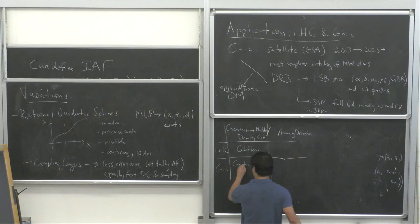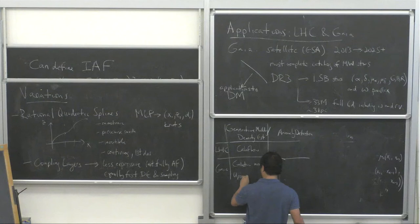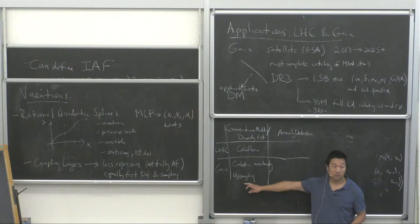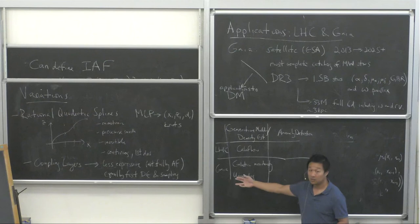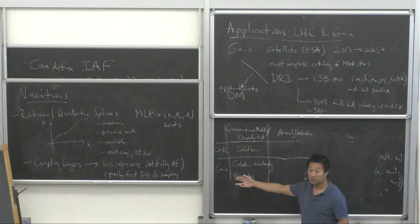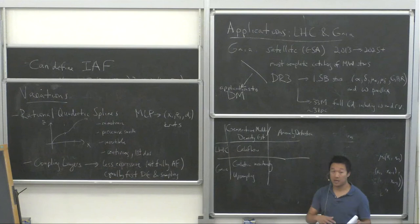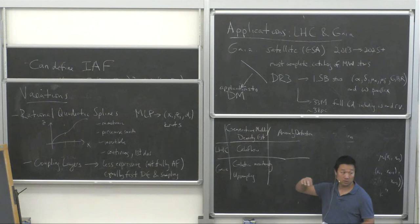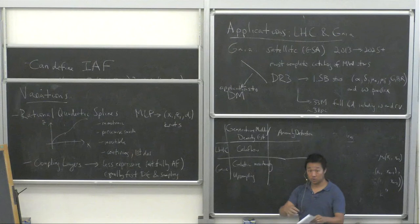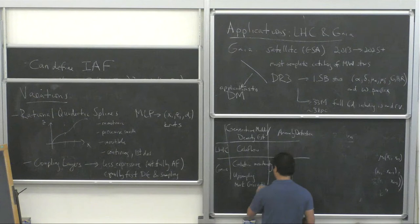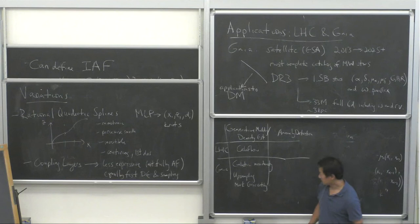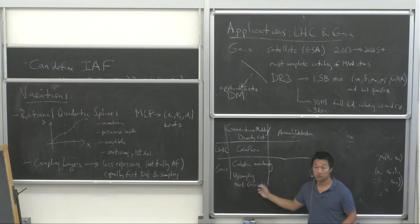We've also been using normalizing flows to upsample Gaia mock catalogs. The best simulations — N-body plus hydrodynamics with baryons — operate at the level of star particles, where each stands for about 5,000 solar masses. There's a step where you have to upsample these star particles into actual individual stars to produce a mock Gaia catalog, and normalizing flows turn out to be extremely suitable for doing this.